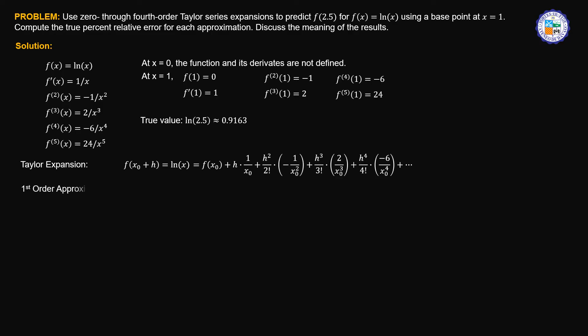For the first order approximation, we are solving for f of 2.5. So x sub 0 is 1, therefore h is equal to 1.5. The first order approximation is 0 plus 1 times 1.5, which equals 1.5. Comparing that to the true value of 0.9163, the relative error is equal to 63.70%. That's too big.